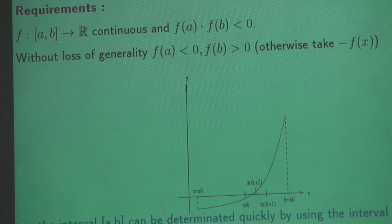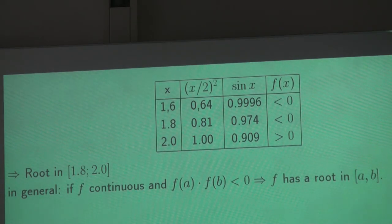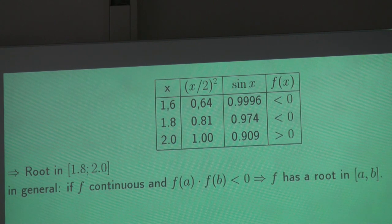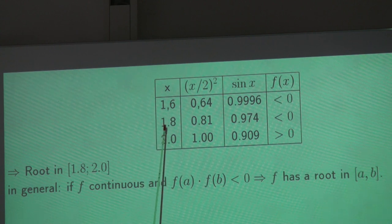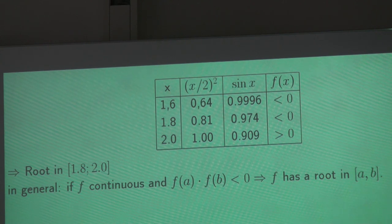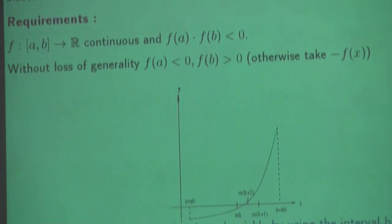One method that improves what we did — which was just more or less randomly testing the sign of our function — is: once you have this interval 1.8 and 2.0, you take the center of this interval, test the sign of the function at this center, and then the width of the new interval is exactly half the width before. That's what we call the interval bisection method.